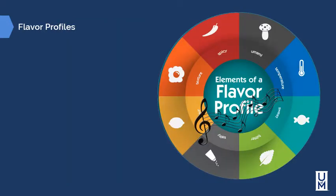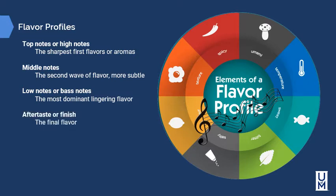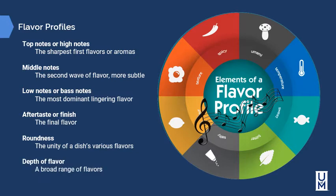Flavor profiles can be discussed as if they were musical notes. Top notes or high notes are the sharpest, first flavors and aromas you taste and smell. Middle notes are the second wave of flavors and are generally more subtle. Low notes or base notes are the most dominant, lingering flavors that last a while. The aftertaste or finish is the final flavor that hangs around after all others are gone. Roundness is the unity of the dish's various flavors — like playing a chord, not a single note. Depth of flavor is the broad range of flavors used in the dish.